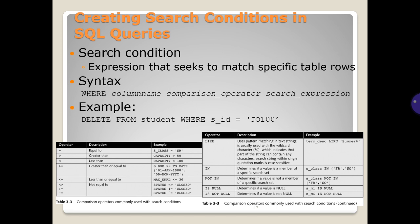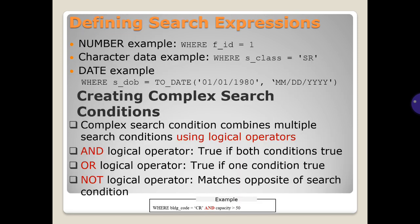Creating search conditions in SQL queries. Search conditions are expressions that seek to match specific table rows. There is a syntax and an example. Defining search expressions: number example, character data example and a date example. Creating complex search conditions. Complex search conditions combine multiple search conditions using logical operators. AND logical operator: true if both conditions true. OR logical operator: true if one condition true. NOT logical operator: the match is opposite of search condition.